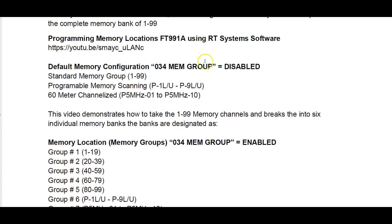The feature we're going to discuss today is under the menu. What we'll do is press the menu setup button quickly and turn the multi-knob until you locate memory location number 34. This is labeled on the list as 034 Memory Group. This is a two-position setting — you can have it disabled or enabled. If you have it disabled, which is the way it comes from the factory, you will have the standard memory one to ninety-nine.